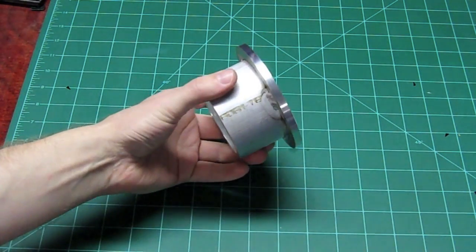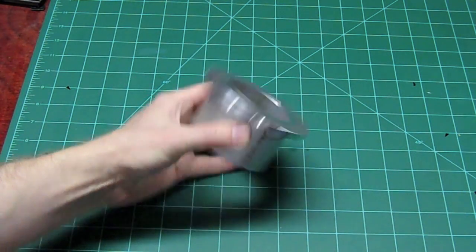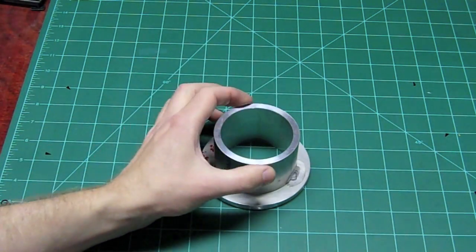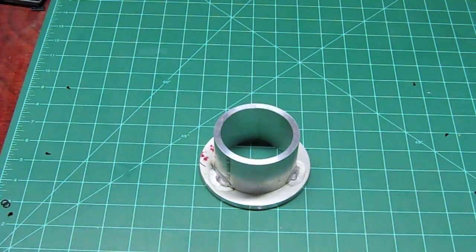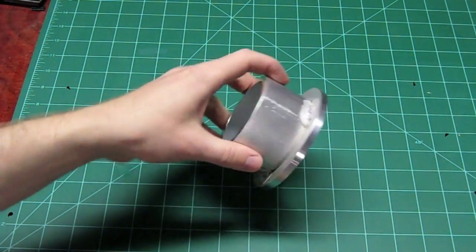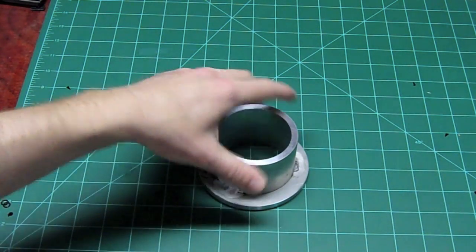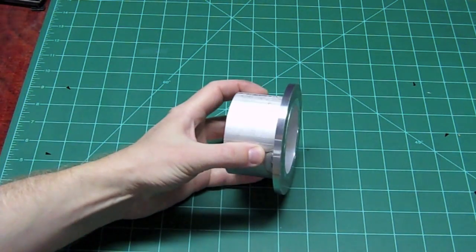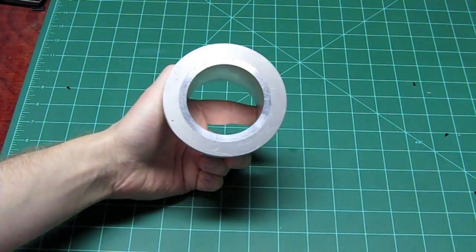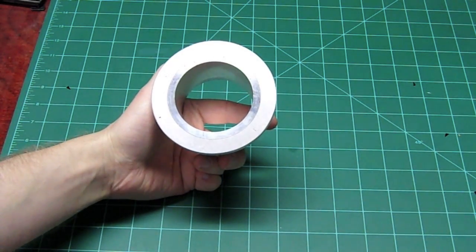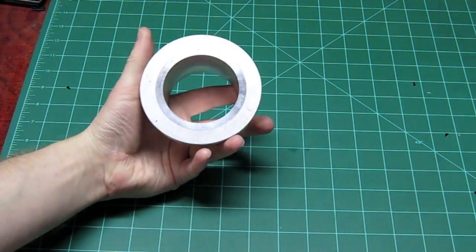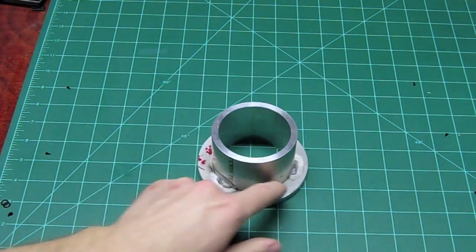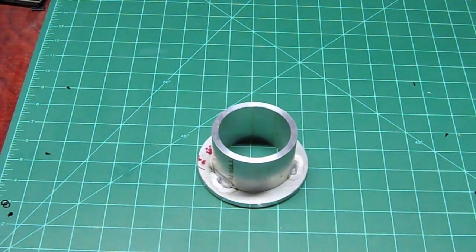What I have here so far is a flange that I made up using a piece of 3-inch OD by quarter-inch wall aluminum pipe, about 2 inches long. I've welded it to this quarter-inch flange that I machined out of quarter-inch plate, which is just over 4 inches. So we've got a flange with about a half-inch lip.